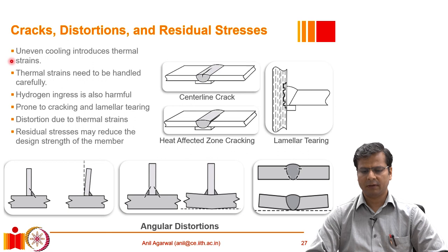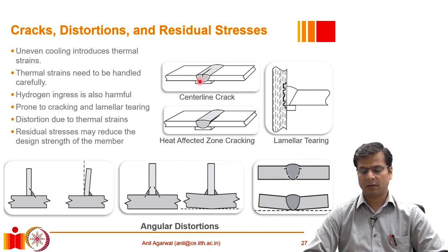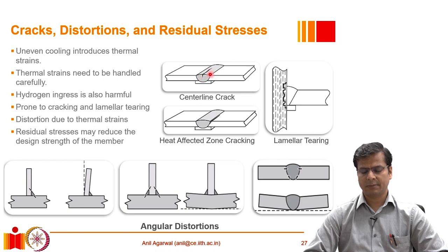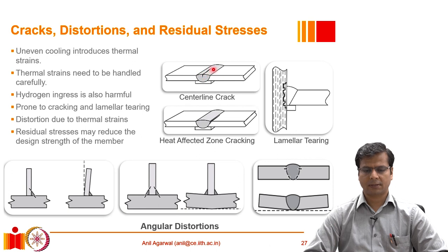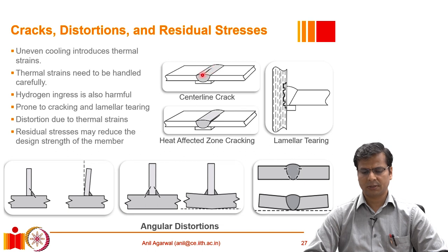As the structure cools down, the metal shrinks. Since the rest of the material is not flexible and remains at cool temperature, it offers much higher rigidity. If the cooling happens rather suddenly, it can lead to fissures or cracks in the welded connection, destroying the weld quality. These situations need to be handled very carefully.